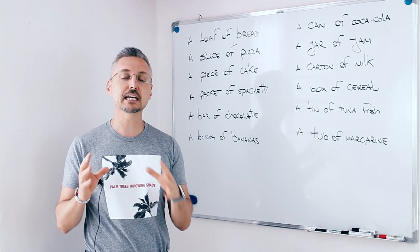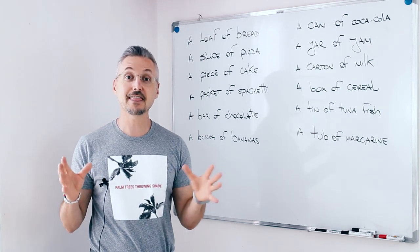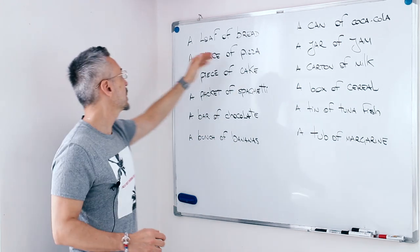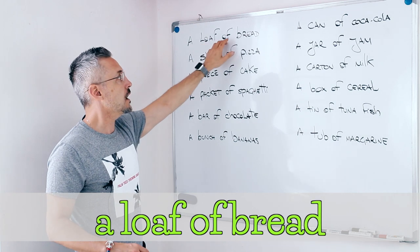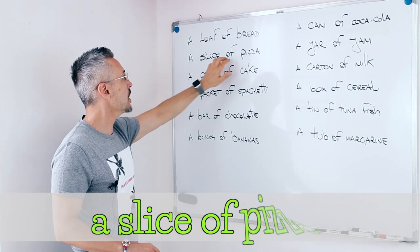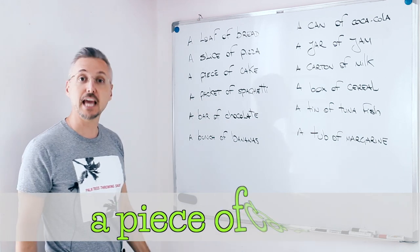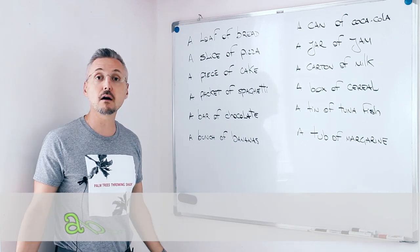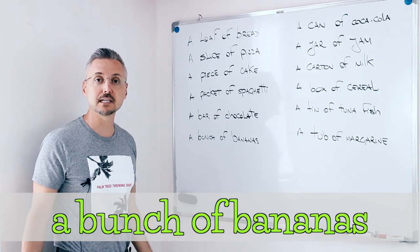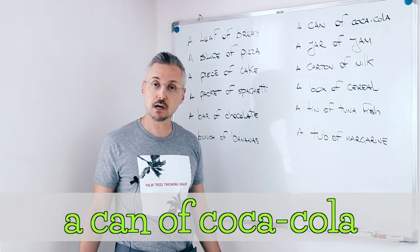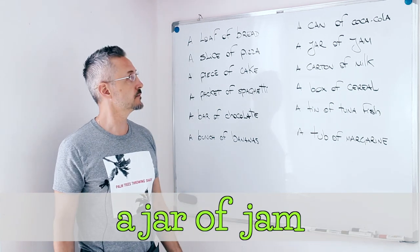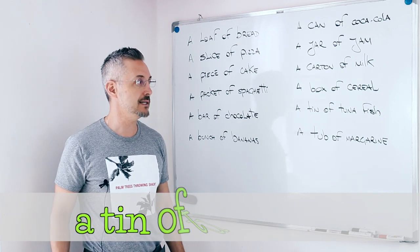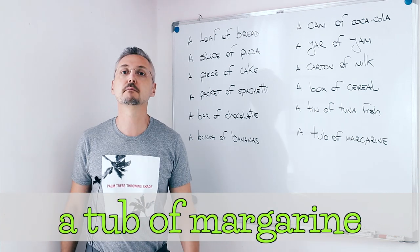So, today we have a very interesting lesson and that is partitives. Let's go to my list. A loaf of bread, a slice of pizza, a piece of cake, a packet of spaghetti, a bar of chocolate, a bunch of bananas, a can of Coca-Cola, a jar of jam, a carton of milk, a box of cereal, a tin of tuna fish, and a tub of margarine.